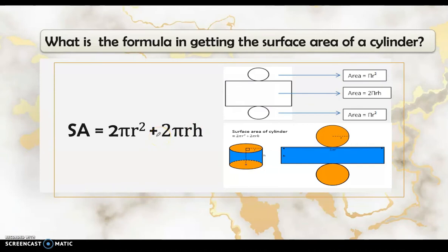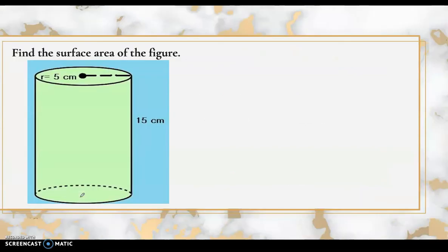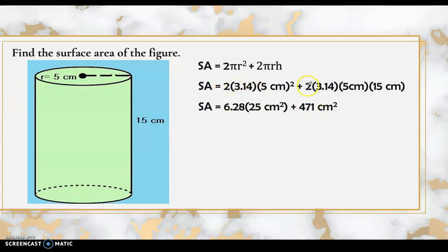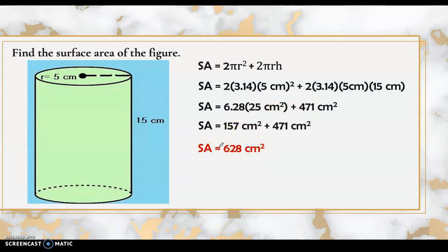Let's have more examples. Find the surface area of a cylinder where the height is 15 centimeters and the radius is 5 centimeters. Using the formula 2πr² + 2πrh, we substitute: 2 times 3.14 times 5 squared, plus 2 times 3.14 times 5 times 15. First, 5 squared is 25; 25 times 6.28 is 157. Then 2 times 3.14 times 5 times 15 gives 471. Adding 157 plus 471, the surface area is 628 square centimeters.